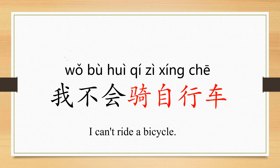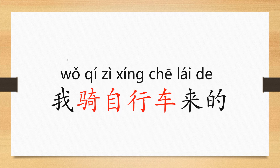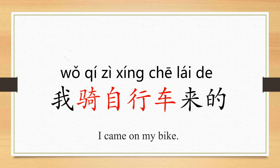我不会骑自行车 — I can't ride a bicycle. 我骑自行车来的 — I came on my bike.